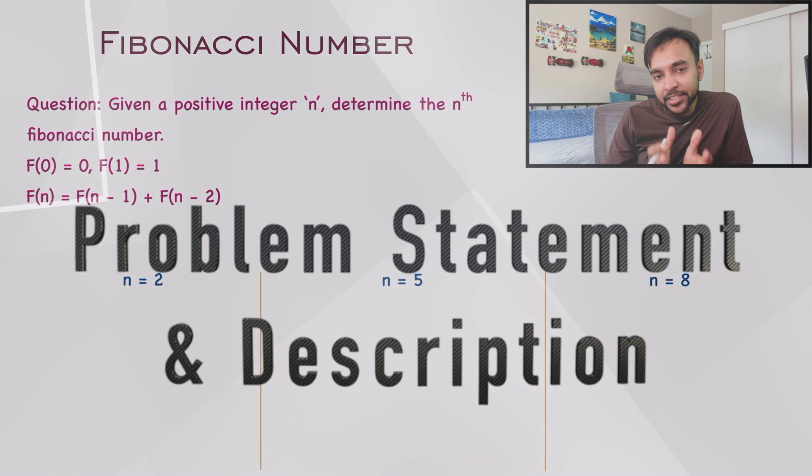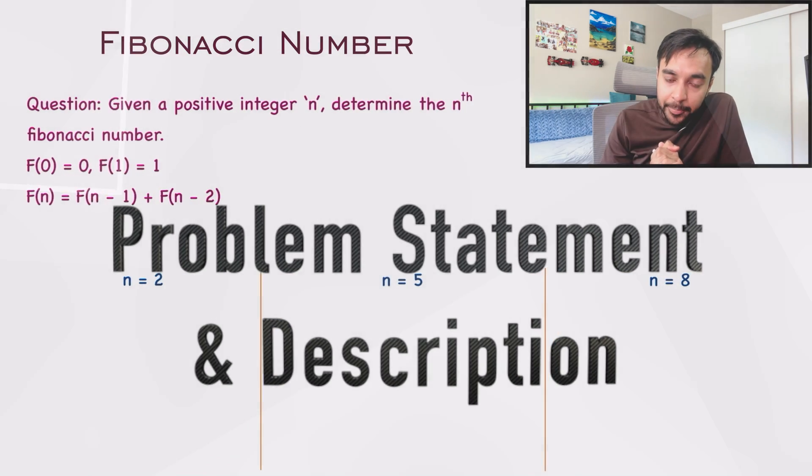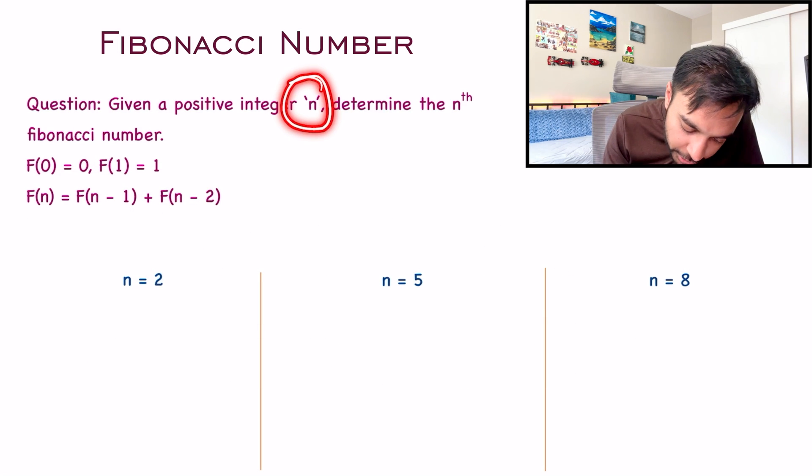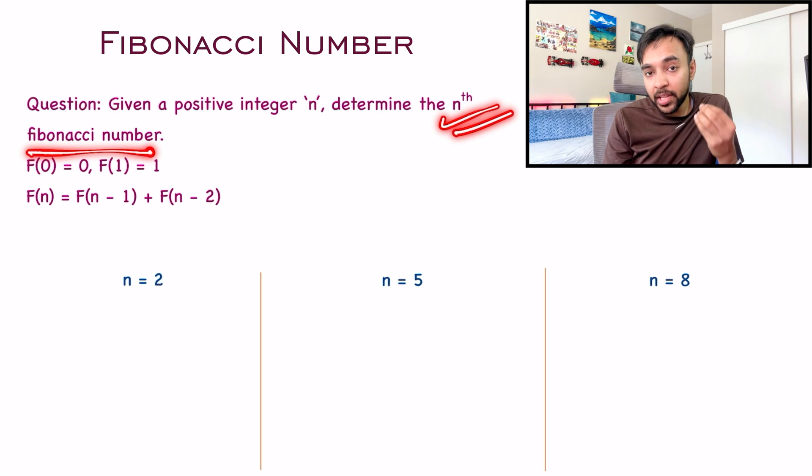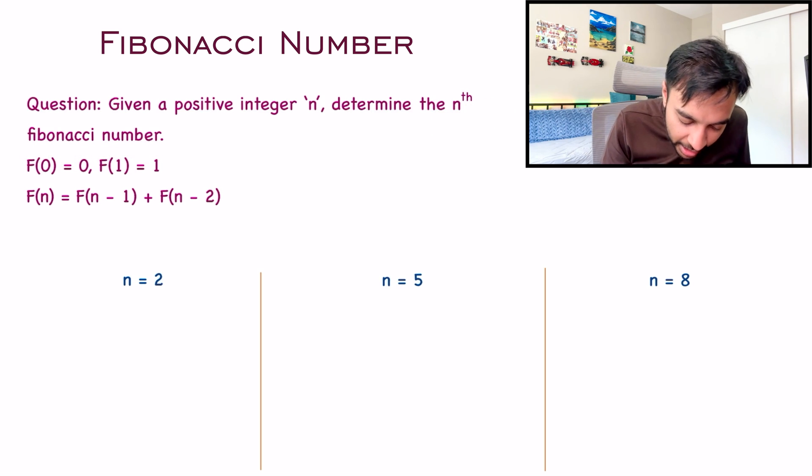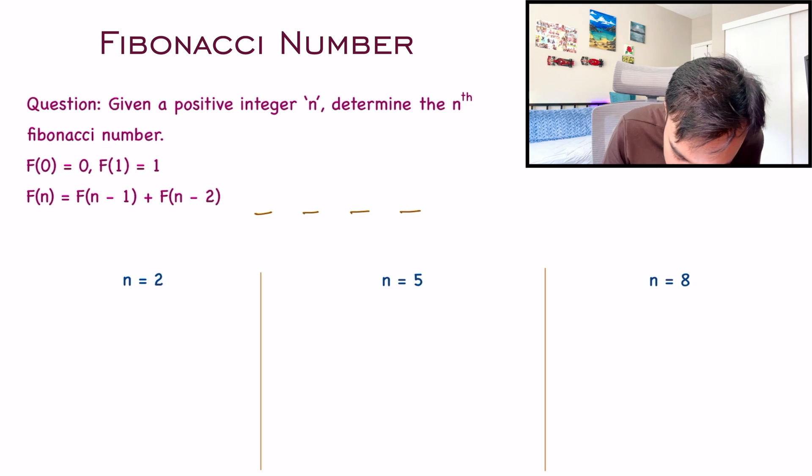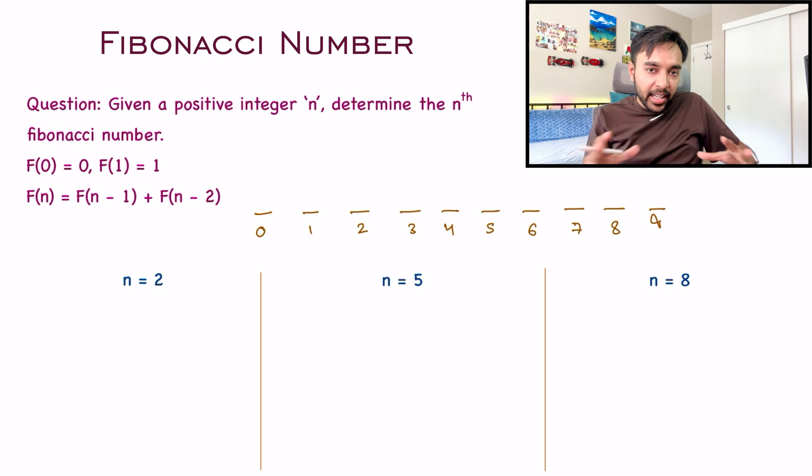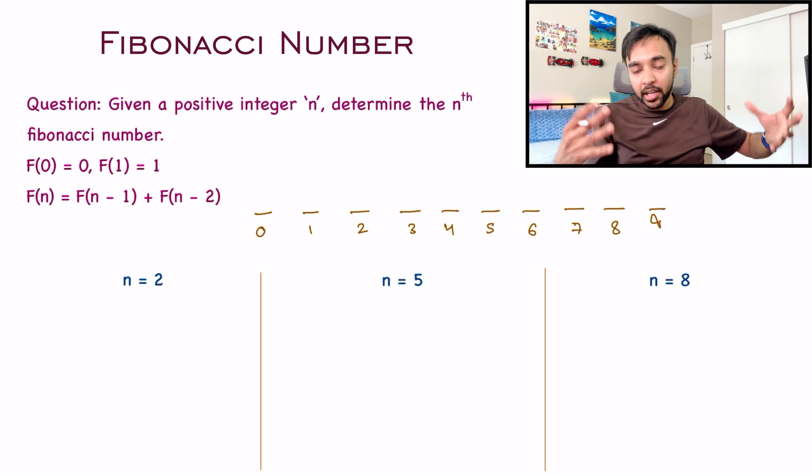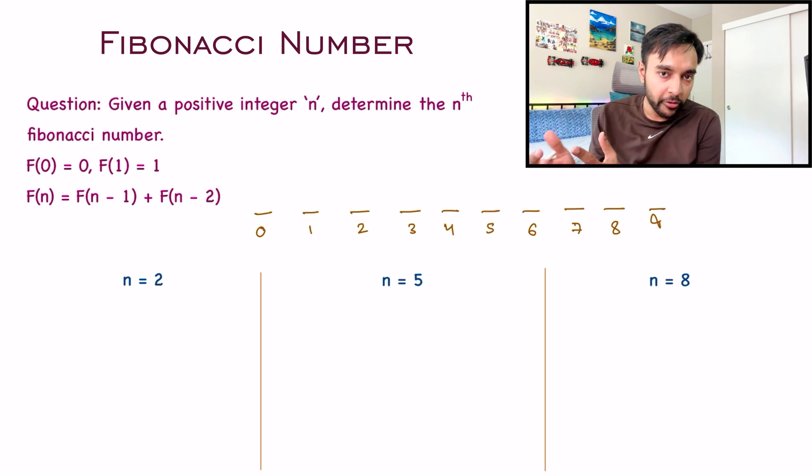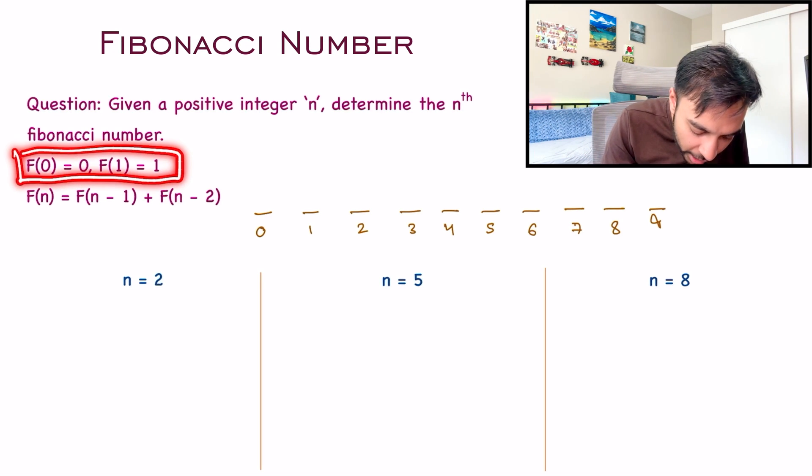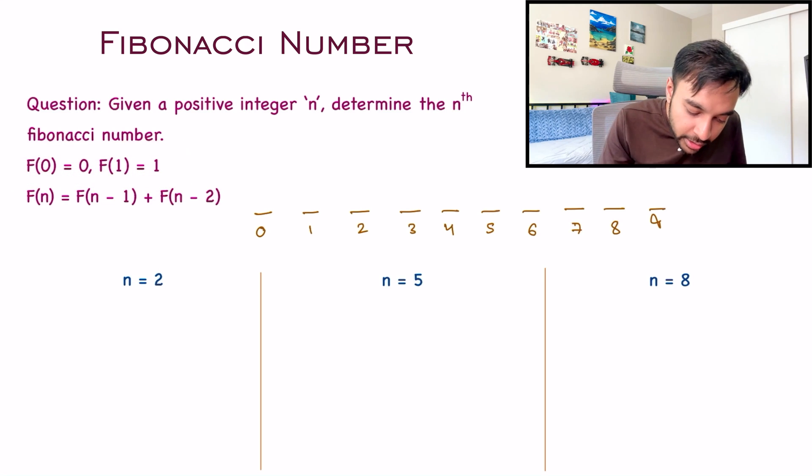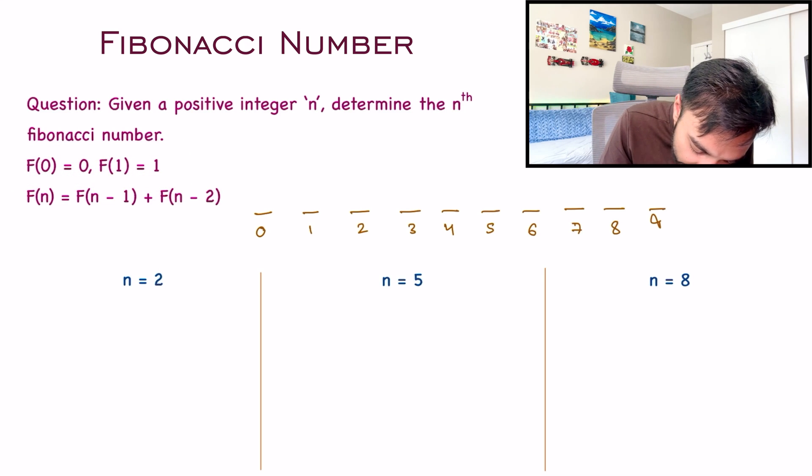First, let's take up a sample problem and understand it. In this problem, you are given a positive integer n and you have to determine the nth Fibonacci number. You will have n different places and you have to fill these places. You are given starter conditions: F(0) equals 0 and F(1) equals 1. So I will write down these two values.